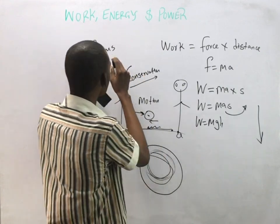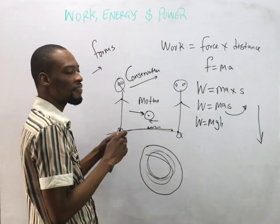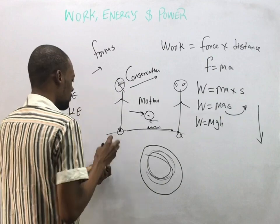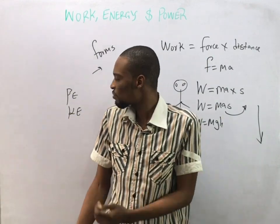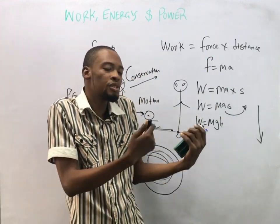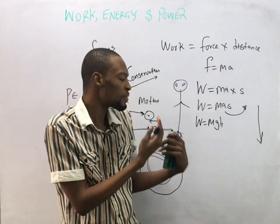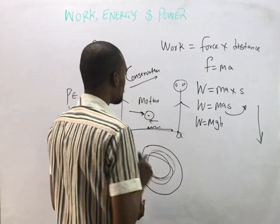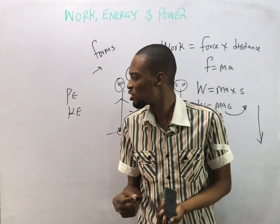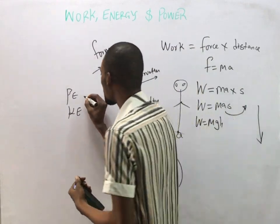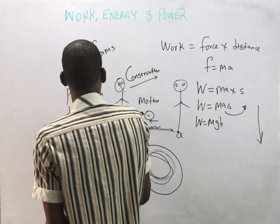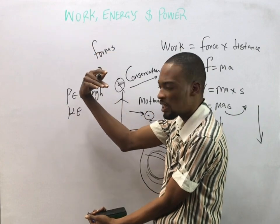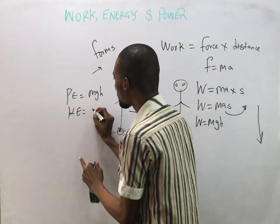Energy can either be potential energy or kinetic energy. Potential energy is the energy a body possesses due to its position relative to other bodies. Kinetic energy is the energy a body possesses due to motion. Potential energy equals mgh, where height describes position, and kinetic energy equals one-half mv squared.